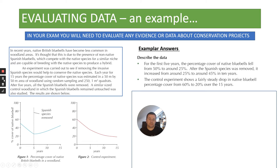For the first question — describe the data — we can talk about both figure one and figure two. In figure one, for the first five years the percentage cover of native bluebells fell from around 50 percent to 25 percent. After the Spanish species was removed it increased from around 25 percent to 45 percent over a 10-year period. In figure two, the control experiment shows a fairly steady drop in native bluebell percentage cover from 60 percent to 20 percent over the 15-year period.